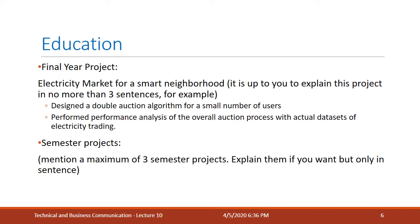In the education section, you also need to mention your final year project. For example, the sample given here is 'Electricity Market for a Small Neighborhood.' You can explain the project in no more than two to three sentences or bullet points. Explaining is good but keep it concise. Do not write paragraphs — use bullets, as they look neat and formal in a CV. Paragraphs in a CV don't look good; bullets are much cleaner.